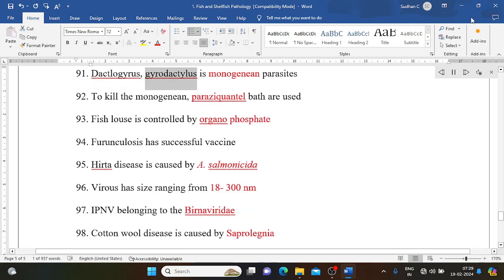Dactylogyrus and Gyrodactylus are monogenean parasites. To kill the monogenean, praziquantel bath is used. Fish louse is controlled by organophosphate.